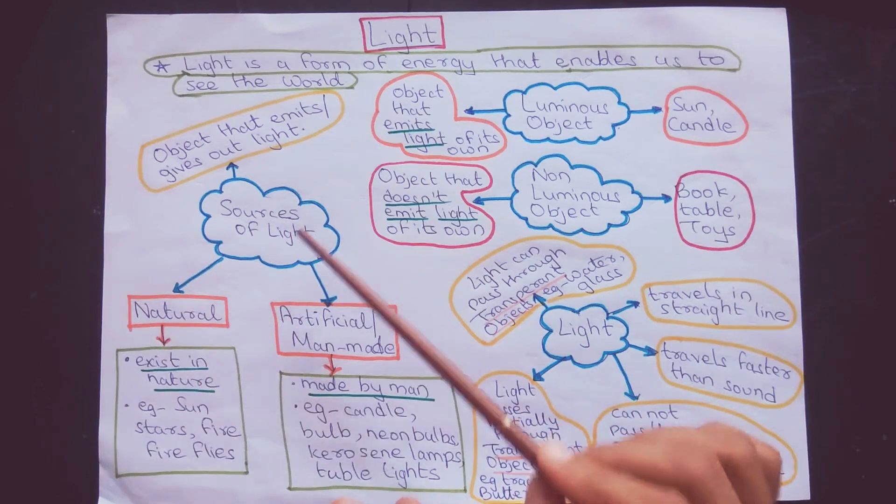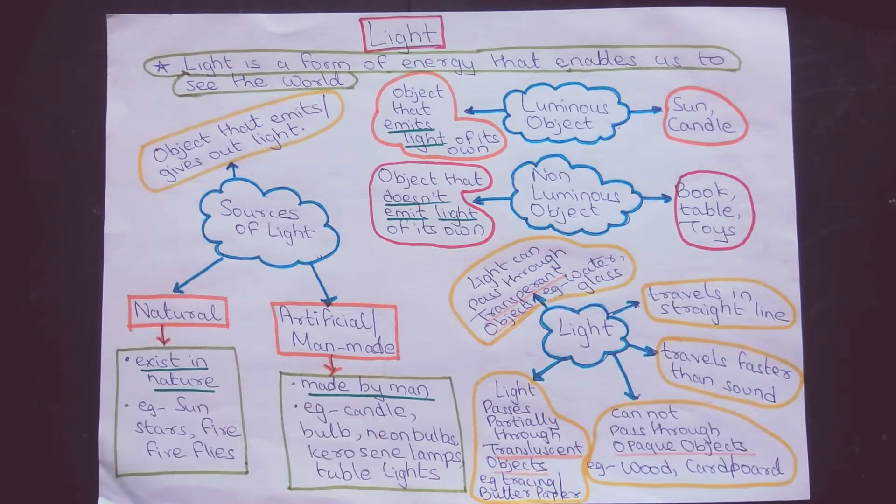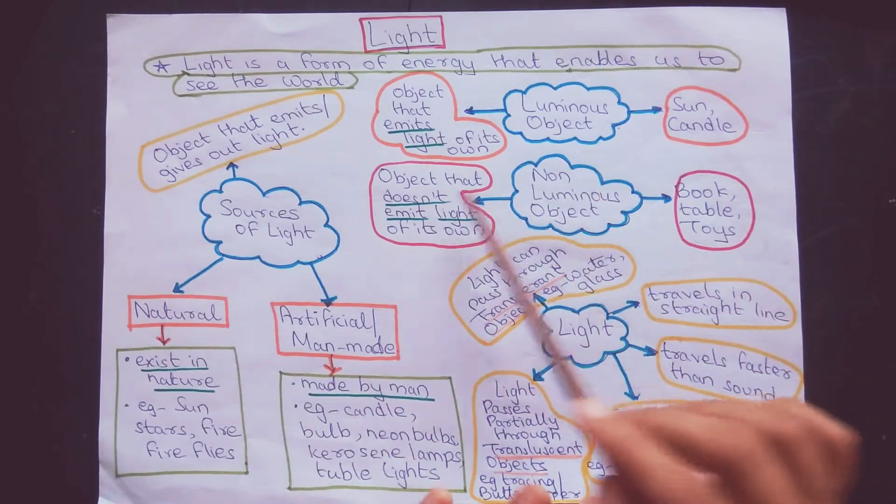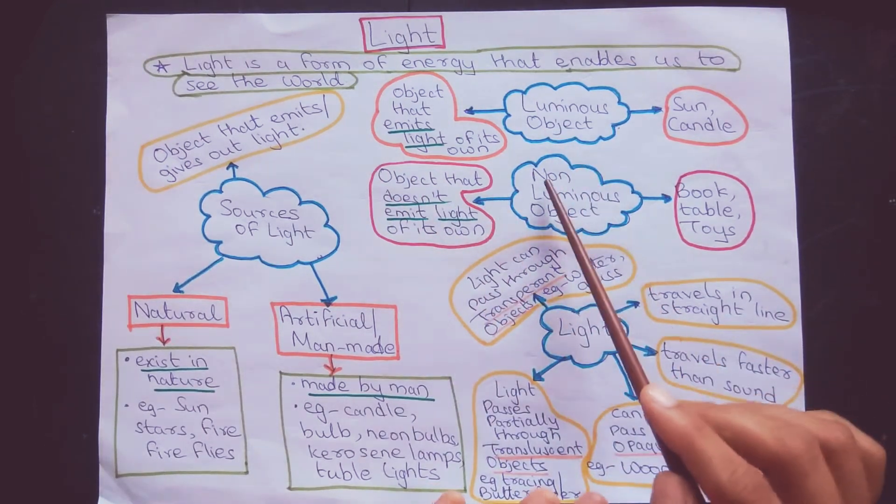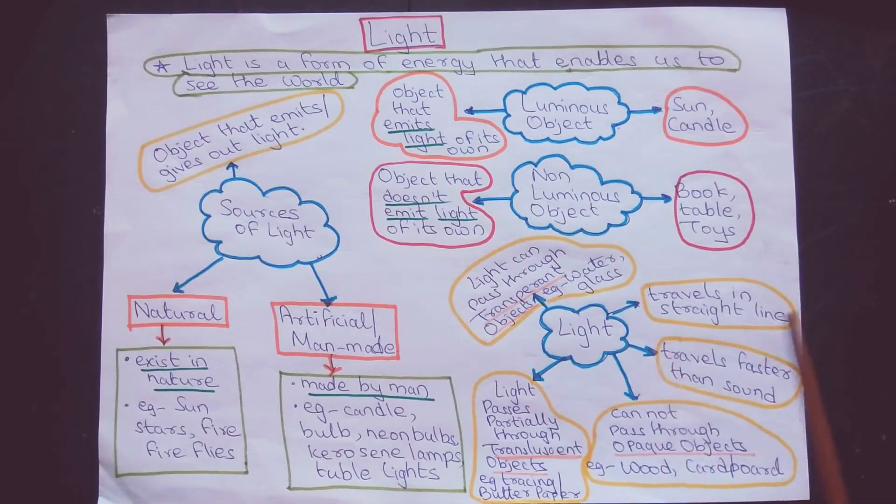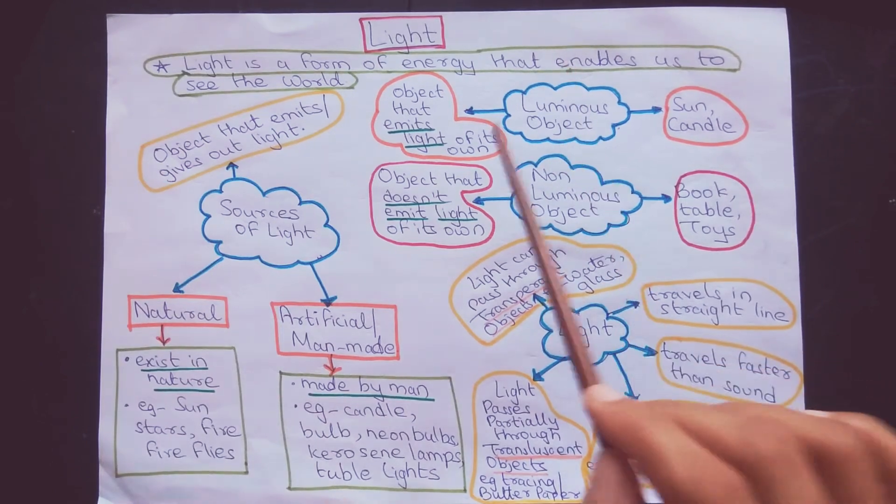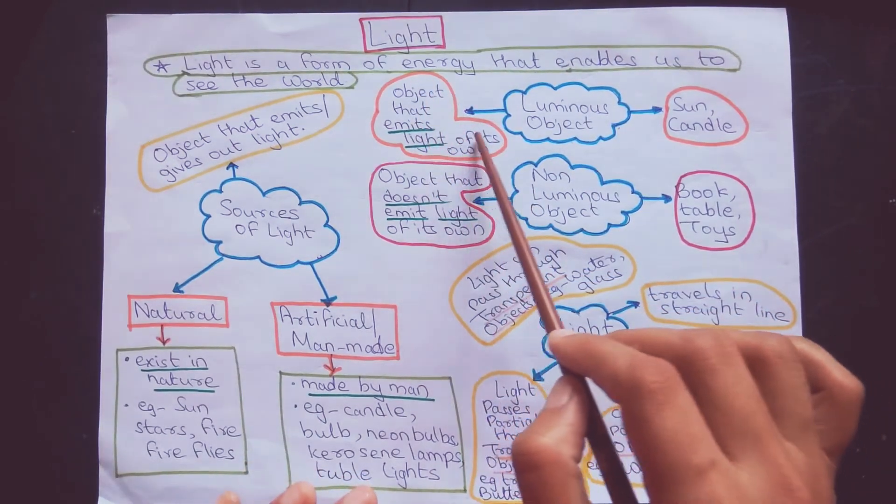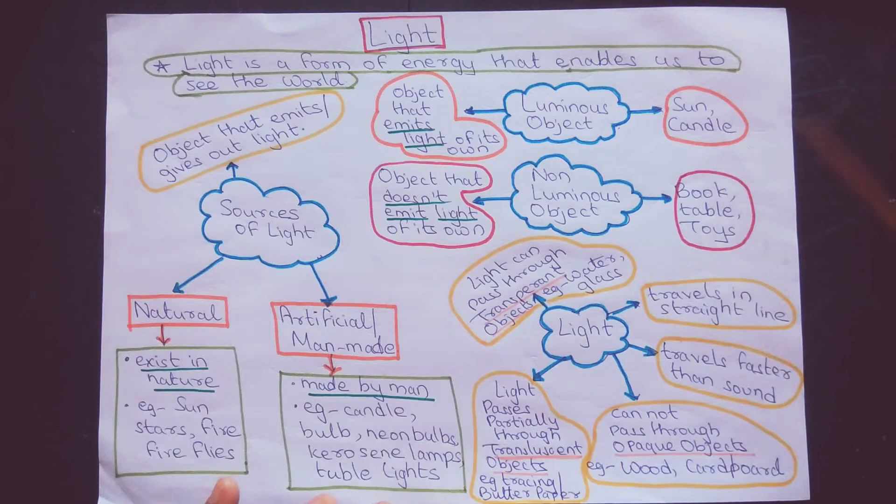There is one more type of concept which we should know about light: non-luminous objects and luminous objects. Luminous objects are those objects that emit light of their own. Examples include the sun or candle, they have light of their own.